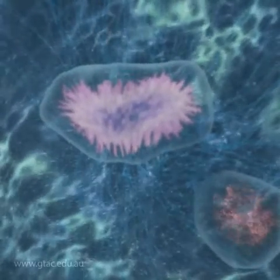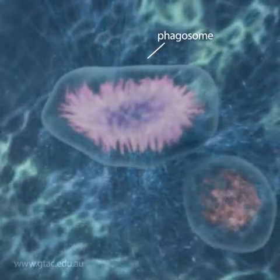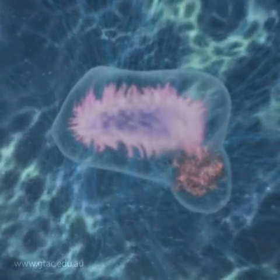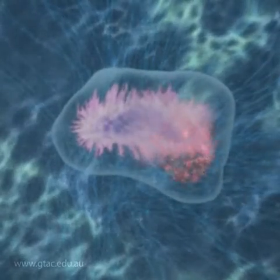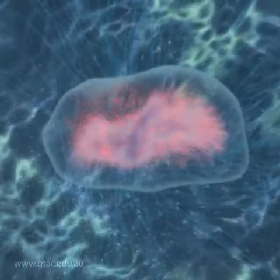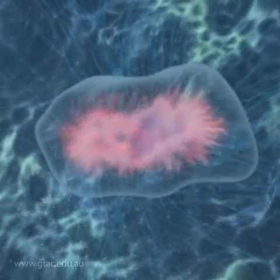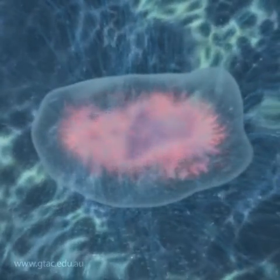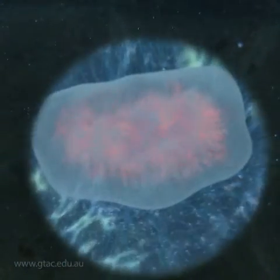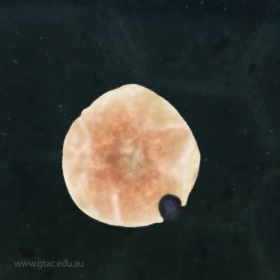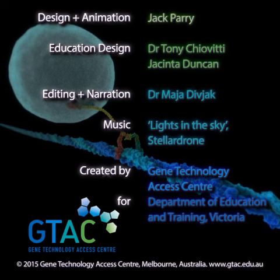The bacterium is held captive in a phagosome. Membranes fuse. The digestive enzymes enter the phagosome and destroy the bacterium. The digested bacterium is discarded by exocytosis.